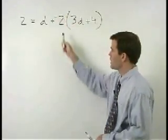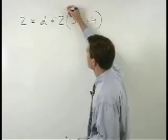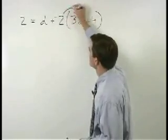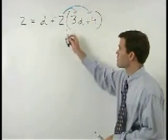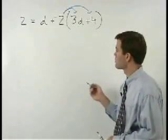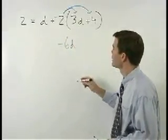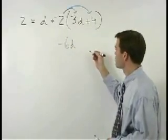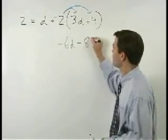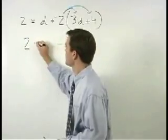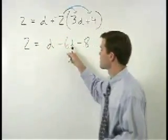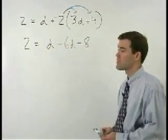So you know you're distributing a negative 2 through both terms inside the parentheses. So negative 2 times 3d is negative 6d and negative 2 times positive 4 is negative 8. So we have 2 equals d minus 6d minus 8.